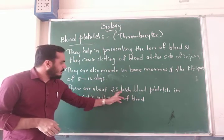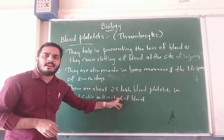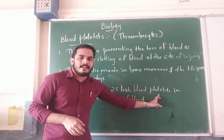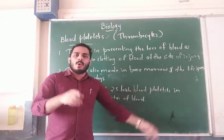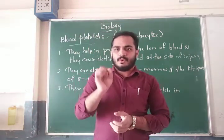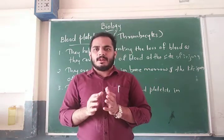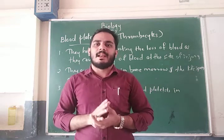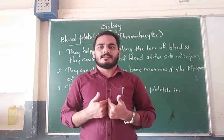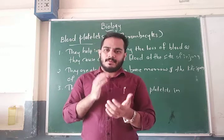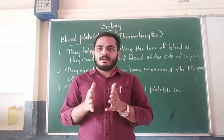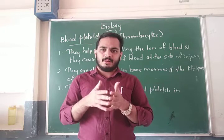There are about 2.5 lakh blood platelets in one cubic millimeter of blood. These platelets help us in preventing bleeding and as a result prevent death.